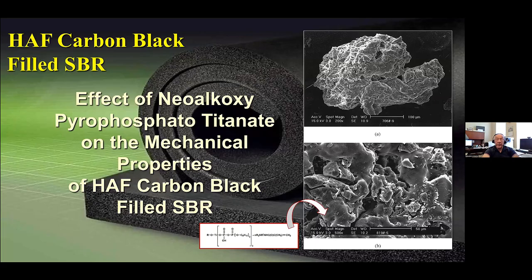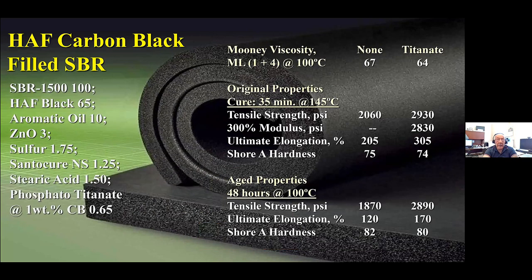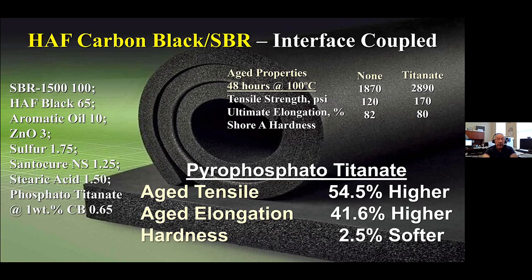In an HAF carbon black study, we examined the effect of the neopentyl dioxy pyrophosphatotitanate on the mechanical properties of SBR. The upper picture shows agglomeration; the bottom shows the deagglomeration caused by the titanate. The improvement in mechanical properties is impressive. On aging after 48 hours, tensile strength is 2,890 psi with the titanate versus 1,870 with the control. You improve aging by 54%, elongation by 41% — not only is it more flexible, it's softer — better impact strength, flexibility, and energy transfer.